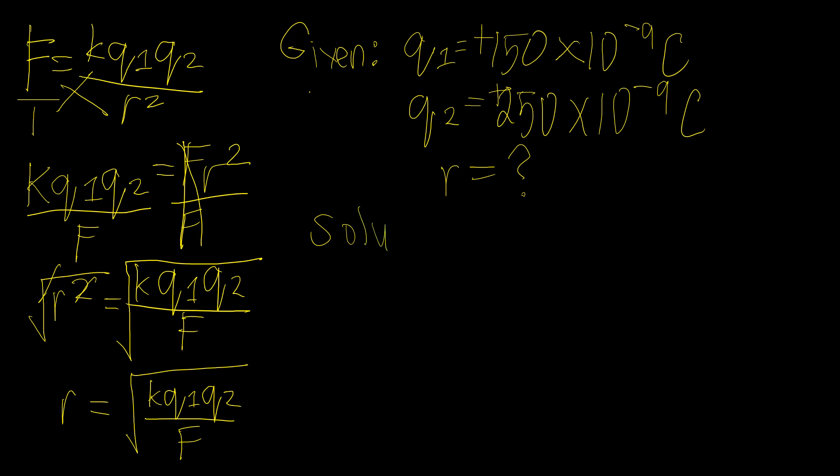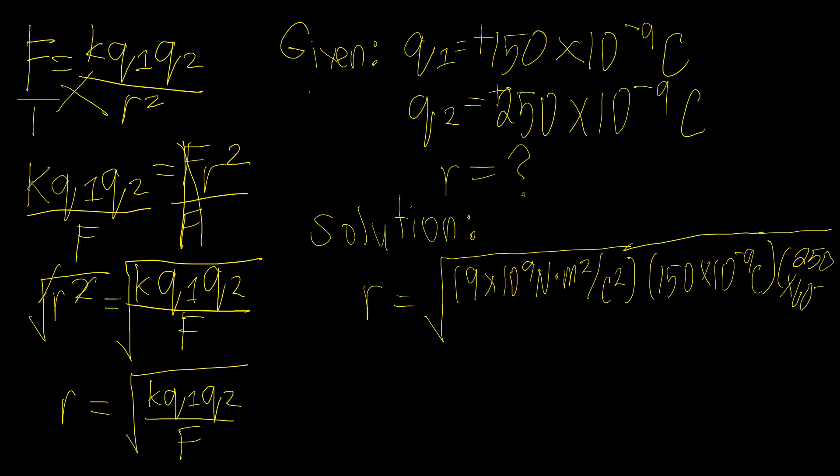Let's solve for R using the formula we have derived. R equals the square root of K, our constant, which is 9 times 10 raised to 9 newton meters squared per coulomb squared, times Q1, 150 times 10 to the negative 9 coulombs, and the second charge is 250 times 10 raised to negative 9 coulombs, over F, which equals 20 newtons.